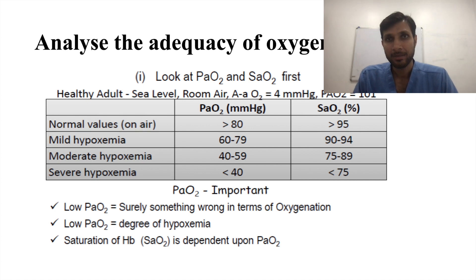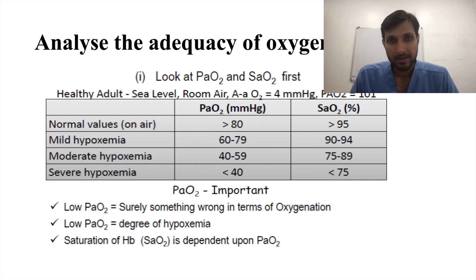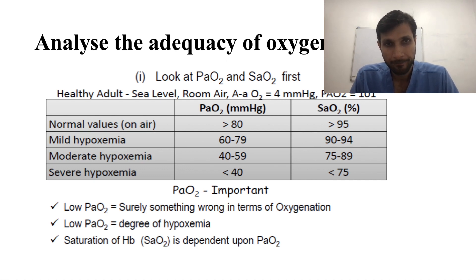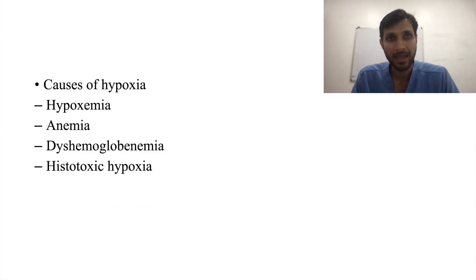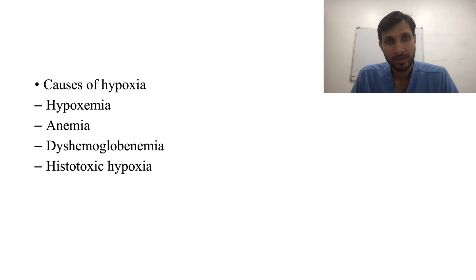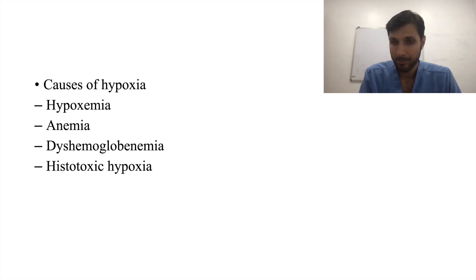An important part of ABG is assessing oxygenation. We look at PO2 and SaO2 first. If there is low PO2, there is something wrong with oxygenation. Saturation of hemoglobin (SaO2) is dependent on PO2. The causes of hypoxia include hypoxemia, low hemoglobin level, hemoglobin disorders such as sickle cell disease, and histotoxic hypoxia due to toxicity.